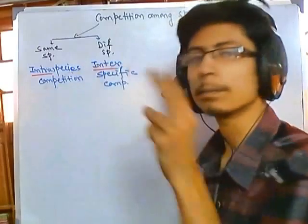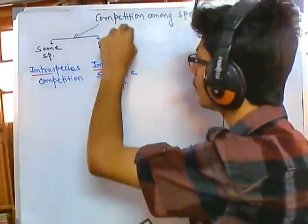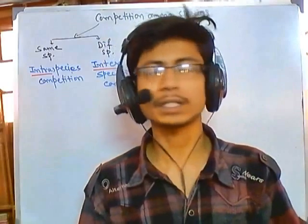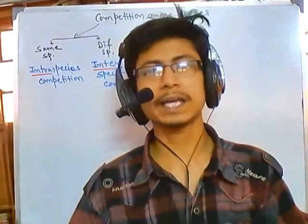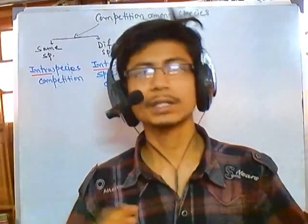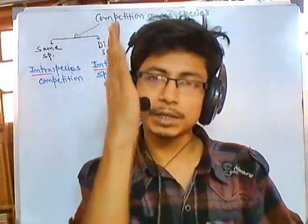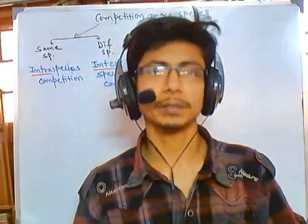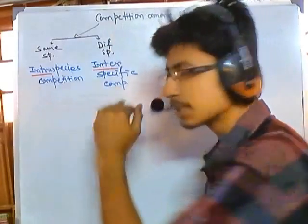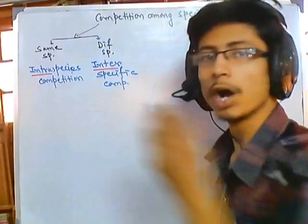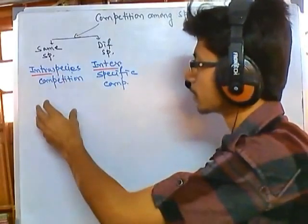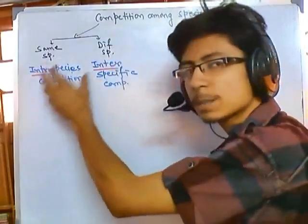In any kind of competition, there must be a common sharing of resources between two individuals, otherwise there wouldn't be any competition. If species A depends on water and species B does not depend on water at all, there will be no competition. But when there is a common sharing — of soil nutrients, water, and sunlight, as with the two mango trees — that is intraspecific competition.